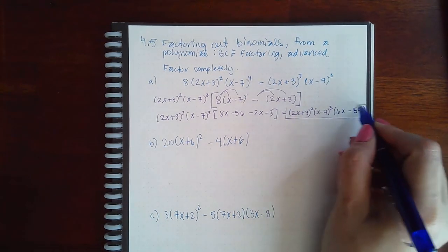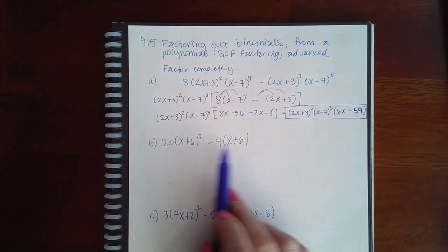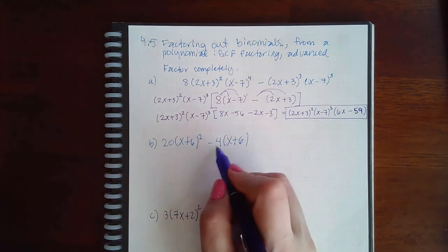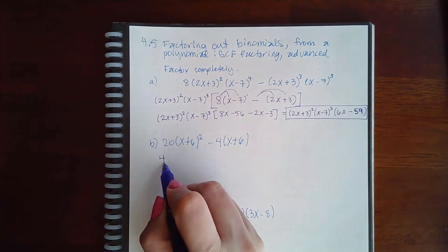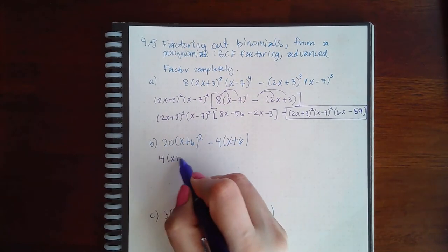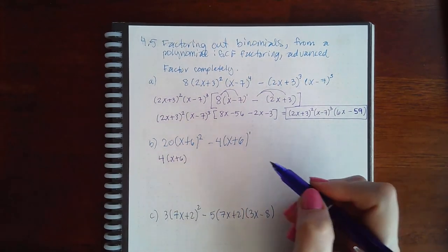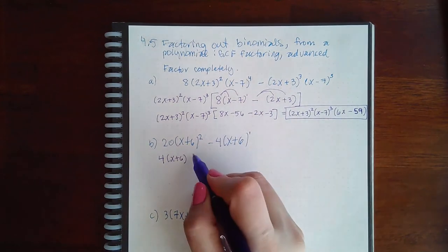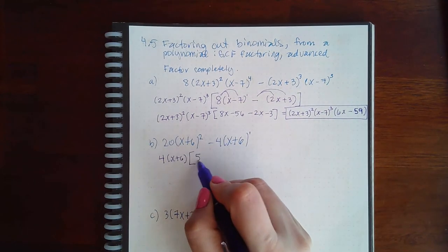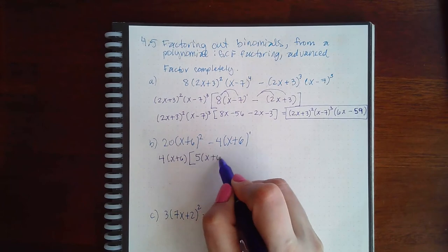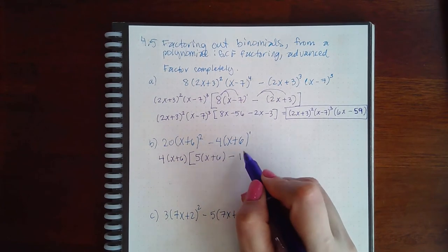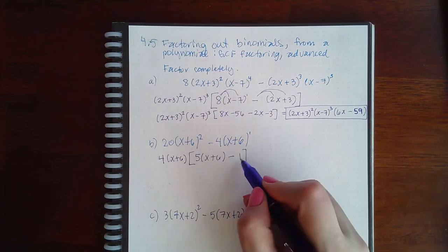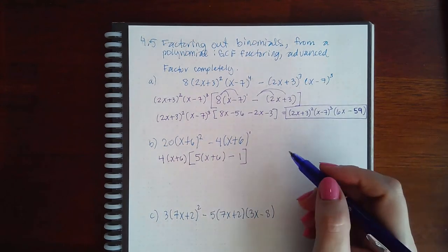Similarly here, I can factor out actually a coefficient of 4 and the x plus 6. But since this one only has 1, I can only factor 1 out, leaving me with 5, one of these left over, and a 1 because 4 divided by 4 is 1, and the x plus 6 has been factored out.